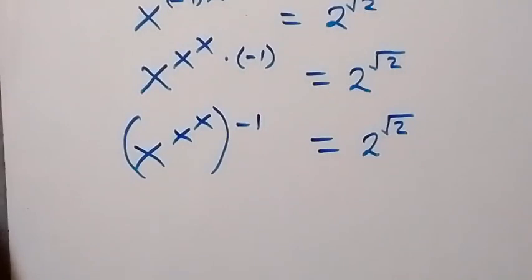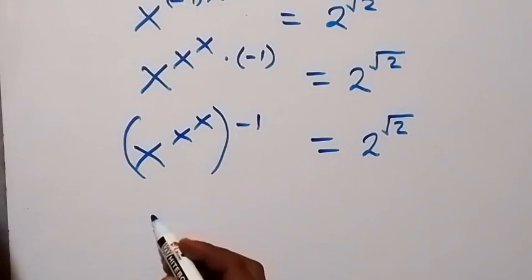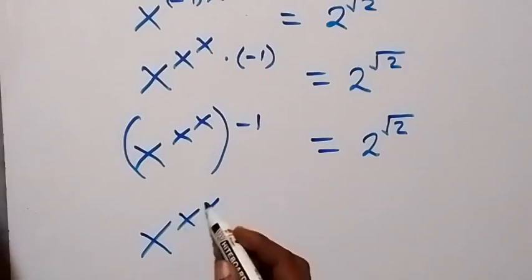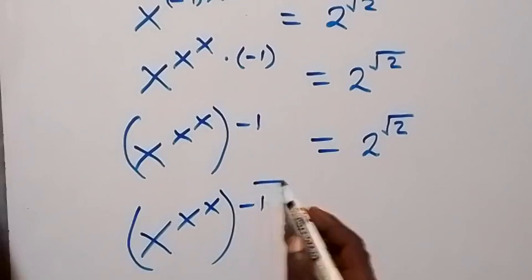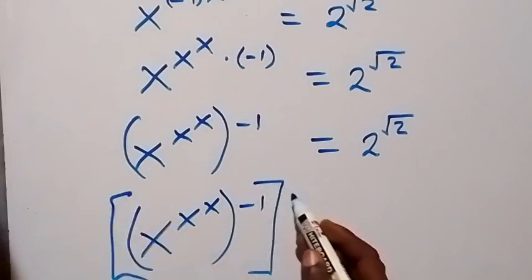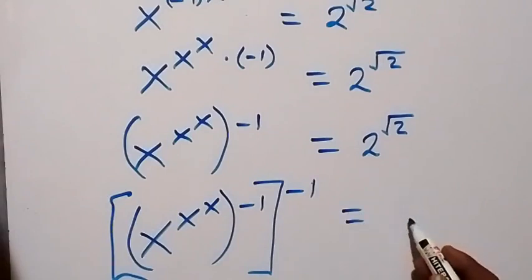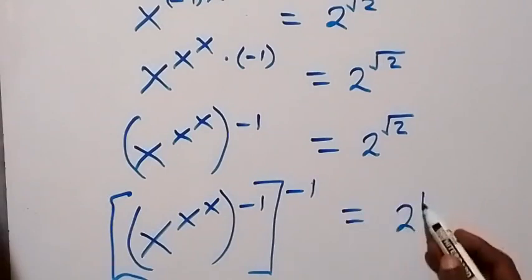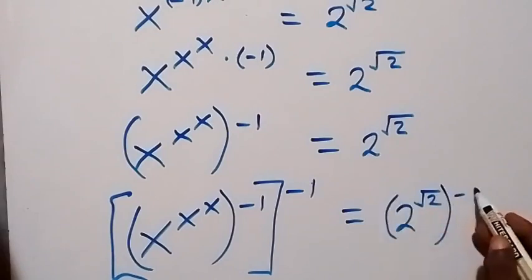Then in the next step, let's raise both sides to power minus 1. So here we now have x raised to power x, raised to power x, raised to power minus 1, then raised to power minus 1 again, which equals 2 raised to power root 2, then raised to power minus 1.